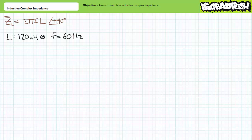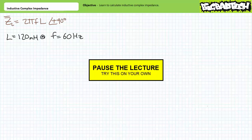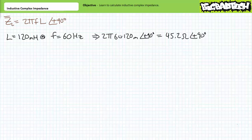As an illustrated example, consider a 120 millihenry inductor subjected to sinusoidal AC with a frequency of 60 hertz. Let's calculate the complex impedance of this inductor, expressing our final answer using polar format. Pause the lecture and try this on your own. When we substitute our given values into the complex impedance formula for inductors, we arrive at an impedance value of 45.2 ohms at an angle of positive 90 degrees. When calculating inductive impedance, just calculate the magnitude using the formula 2πfL, then stick an angle of positive 90 degrees behind it. If we were to express this in rectangular format, Z of L would be equal to positive j·45.2 ohms.